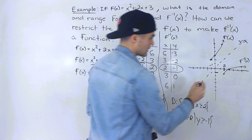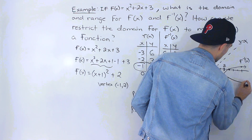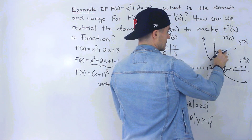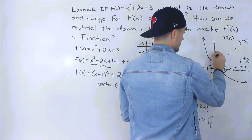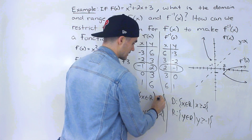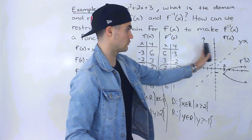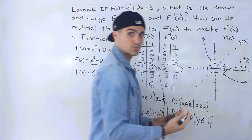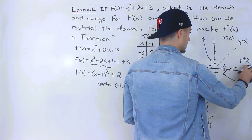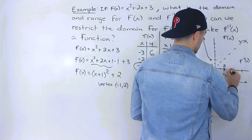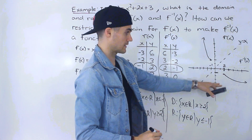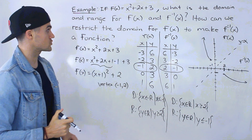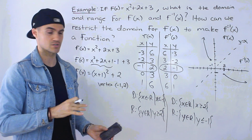We could have also gone the other way: restrict the domain of the function to x ≤ −1. That would keep the other leg of the parabola, and the range of the inverse would then be y ≤ −1, keeping only that leg of the sideways parabola. Either restriction works.